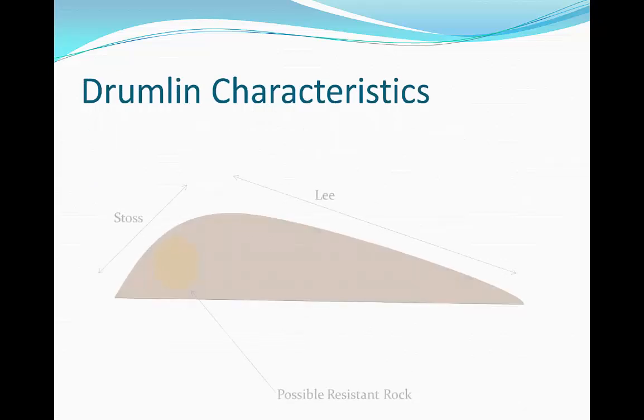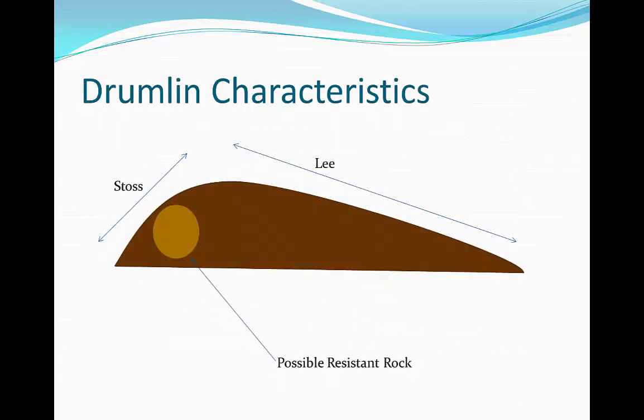So the drumlin characteristics — this is what a drumlin looks like. Now there are two slopes to it. The uphill slope is called the stoss, and the downhill slope is called the lee.